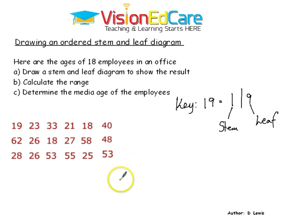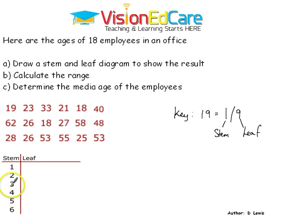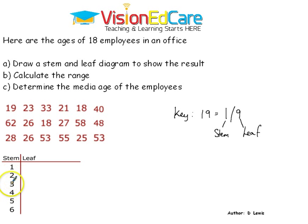All you have to do is draw a column with stem and another column showing leaf, and then you complete your chart. It is very important to know that the smallest numbers range between 10 and 19, which is why we have one as a stem. Between 20 and 29 is represented by two, and 30 to 39 by three. Our biggest number is 62, so that is why we have six.